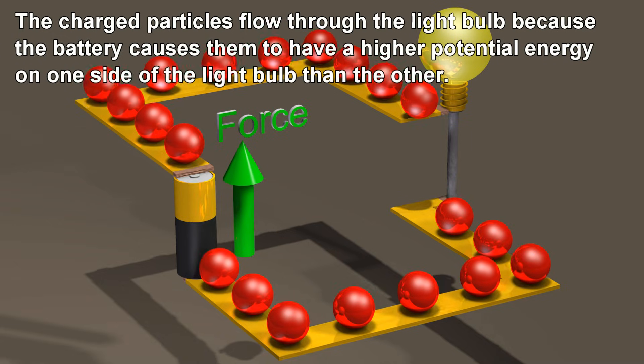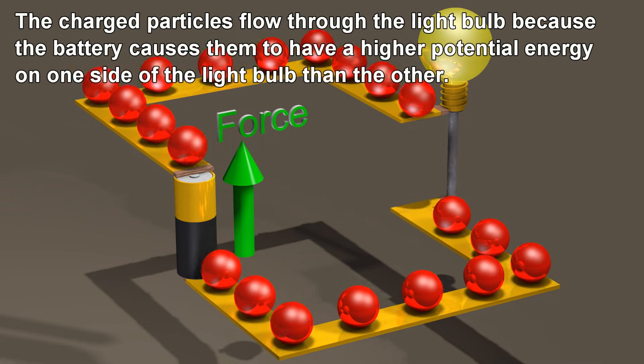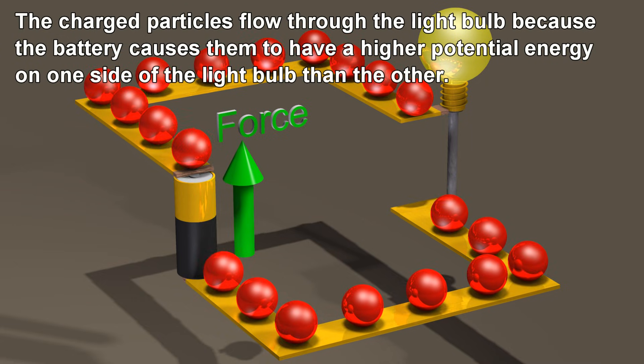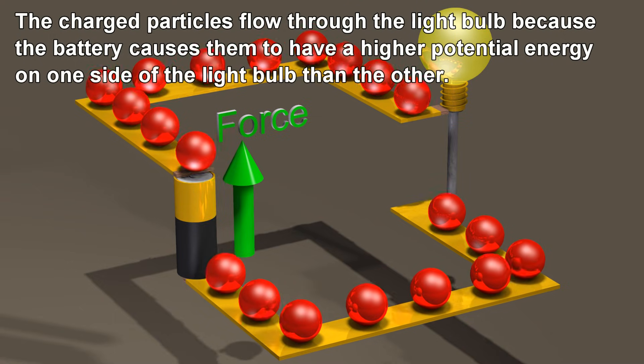The charged particles flow through the light bulb because the battery causes them to have a higher potential energy on one side of the light bulb than the other.